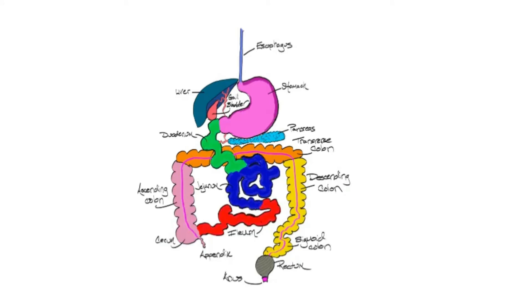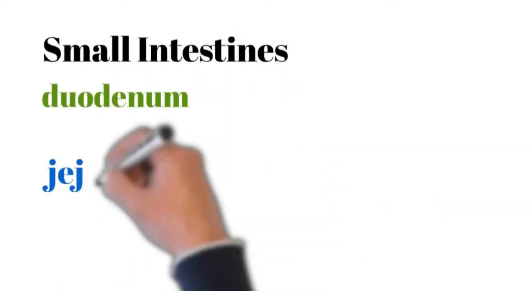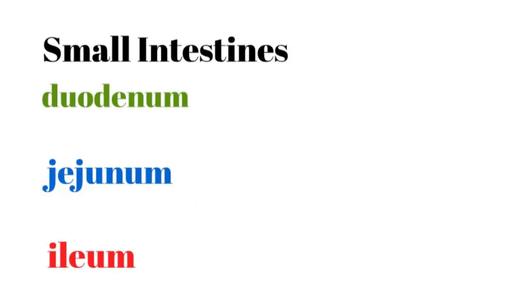The small intestine, shown in green, blue, and red, consists of the duodenum, jejunum, and ileum. The great majority of the small intestine is made up of the jejunum, followed by the ileum; the duodenum is the shortest of the three. The duodenum is the portion closest to the stomach, while the ileum is furthest from the stomach and meets up with the large intestine, specifically with the cecum.